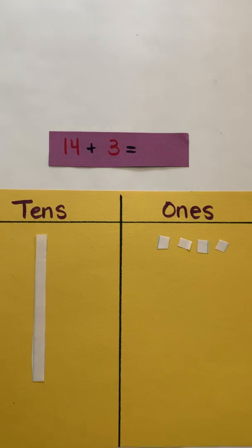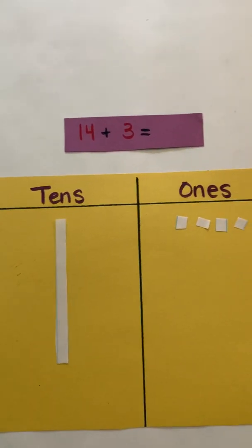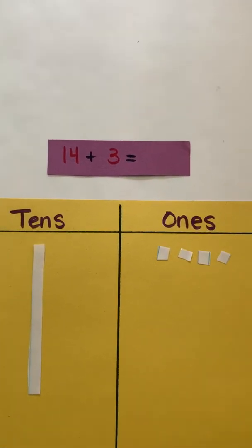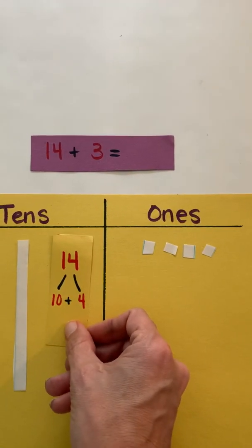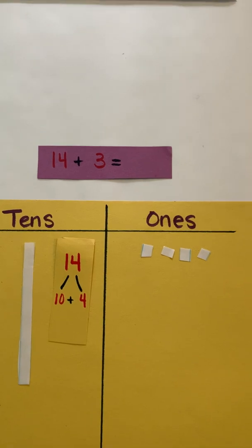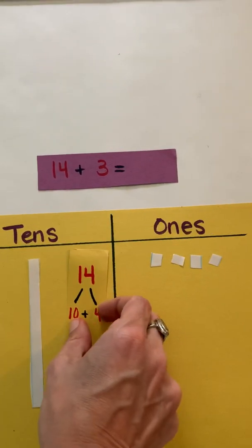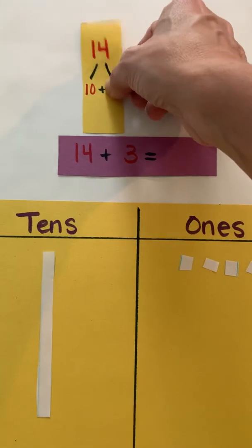So what I did first is I thought of 14 and I was thinking back to the lesson that we had earlier this year on place value and how I know that 14 is a ten plus four ones. So that's where I get my ten here and my four ones, and I'm just going to stick that right up there right now.